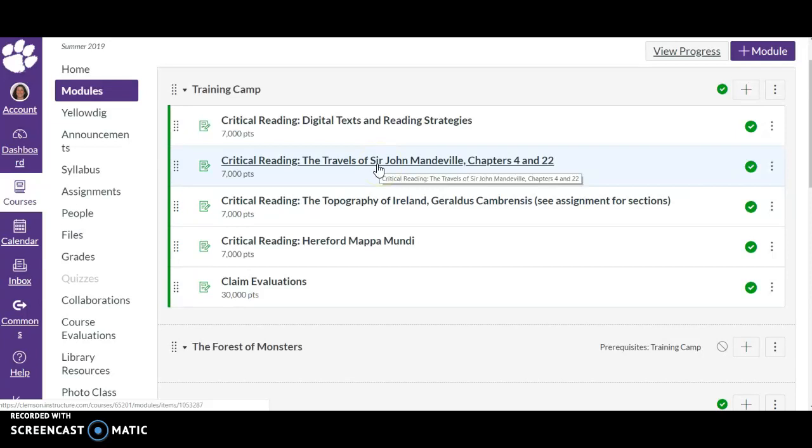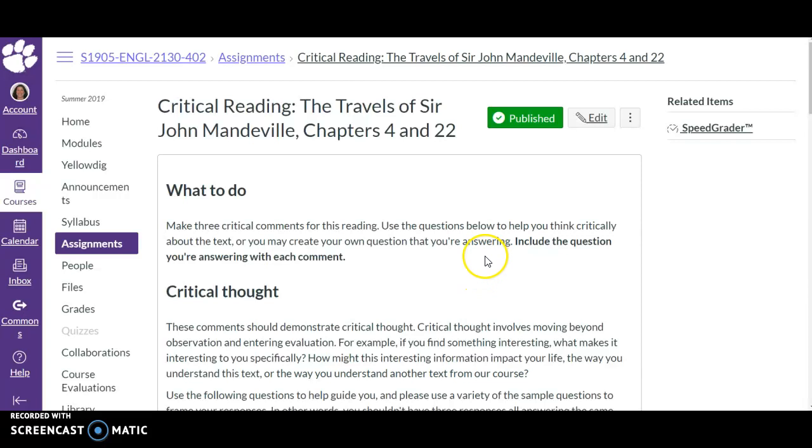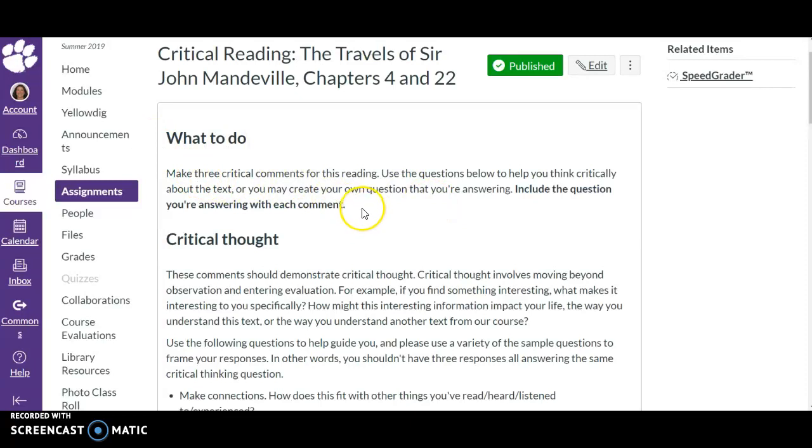So I'm going to walk you through, for instance, the critical reading assignment for the Travels of Sir John Mandeville. I'm going to click on this in your Canvas, which will be in the upcoming assignments section. You can also find it in modules. So what you're going to do is for every reading, create three critical comments.